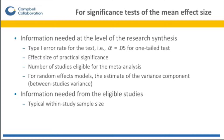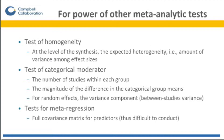At the level of the primary studies, we also need to know something about the typical within-study sample size. If we're interested in power of other meta-analytic tests, such as a test of homogeneity, we also need to know the expected heterogeneity, or amount of variation we expect among effect sizes. If we think we're going to do a test of a categorical moderator, we also need to know the number of studies within each group defined by that moderator, the magnitude of the difference we expect between groups, and in random effects, something about the between-studies variance.